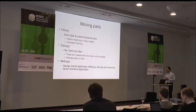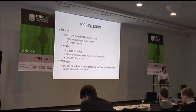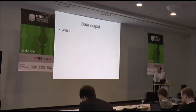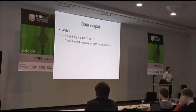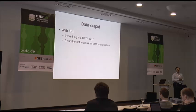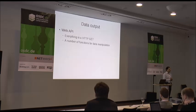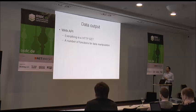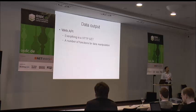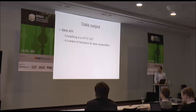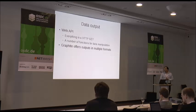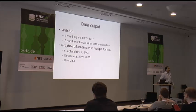There is a Django-based front-end application that offers you the API and the JavaScript flat front-end. The output web API — everything is an HTTP GET. This makes for some horrible URLs. We have run into the size limitation of a web server where the GET request can only be so big. It offers a number of functions for data manipulation. You get output in multiple formats: graphs, structured data, and raw data itself.